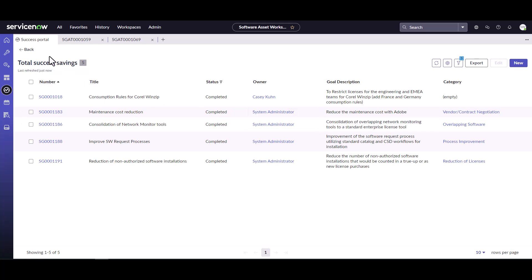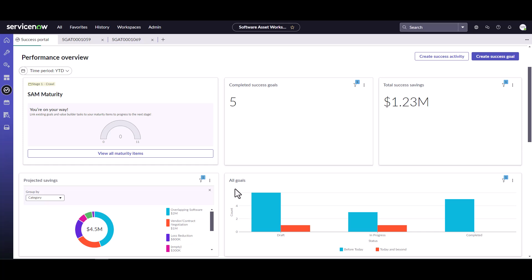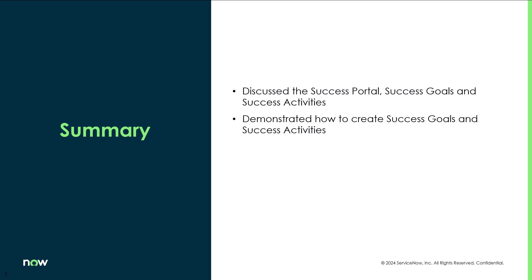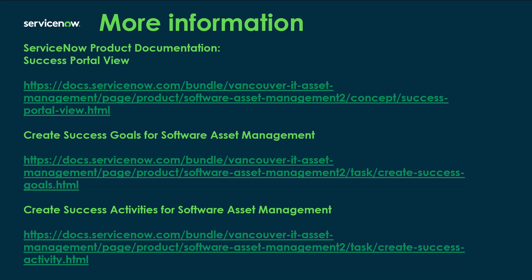So that is success goals and activities. You can create as many goals and activities as you want, as long as you're making sure you're using this to align with maturing your SAM program or making sure your goals align with those business objectives you're really trying to achieve. Today we talked about the Success Portal and more specifically about success goals and activities, demonstrated how to create a success goal and specific success activities, and talked about projected and actual savings and how they roll up into the dashboard. For more information, you can go to the ServiceNow product documentation website for links on Success Portal view, creating success goals, and creating software success activities for software asset management.